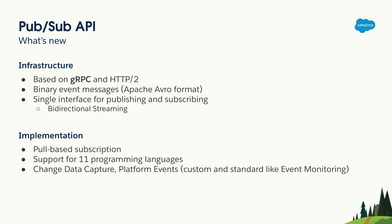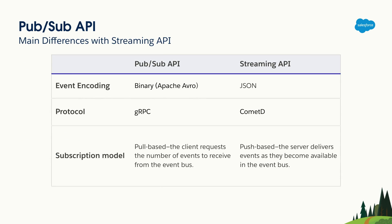Finally, PubSub API can be used with change data capture, platform events, but not with push topics or generic events. This table is the one you will find if you search PubSub API in Salesforce documentation. We want to highlight three key notes: event encoding, protocol, and subscription model. The event encoding in PubSub API is binary, while in the Streaming API it is JSON format. This is a huge change in terms of performance because binary messages tend to be smaller than JSON, making PubSub API faster.